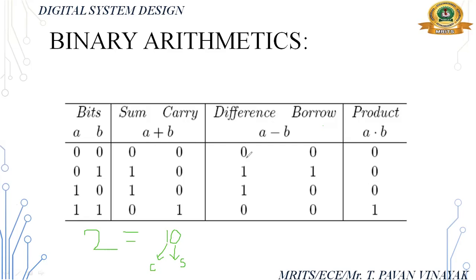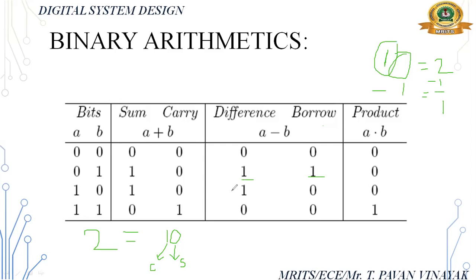Next, binary subtraction. 0 minus 0: difference is 0, no borrow. 0 minus 1: not possible directly, so we take a borrow of 1; that gives us 10 in binary (which is 2), and 2 minus 1 equals 1, so the difference is 1 and borrow is 1. 1 minus 0: difference is 1, borrow is 0. 1 minus 1: difference is 0, borrow is 0. For multiplication: 0 times anything is 0; 1 times 1 is 1.